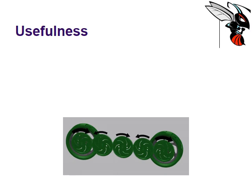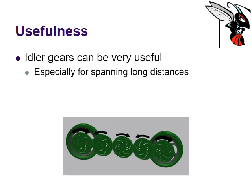So why do we care? Why would we use them? What is the use if you don't get any advantage out of them? Well, we've already spoken that they reverse motion, so if you want things to spin in a particular direction, you can use an idler. They are also useful for spanning long distances. If you've got one motor sticking through an axle in the middle of a gear but your wheels are far away, you need some idlers in order to span that distance. So they are still quite useful.